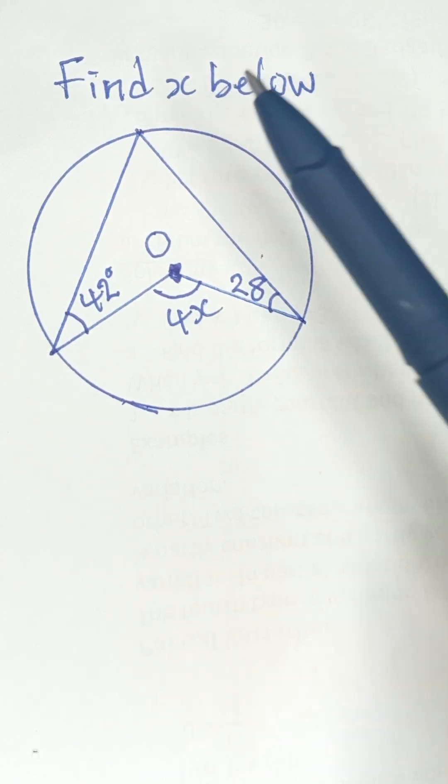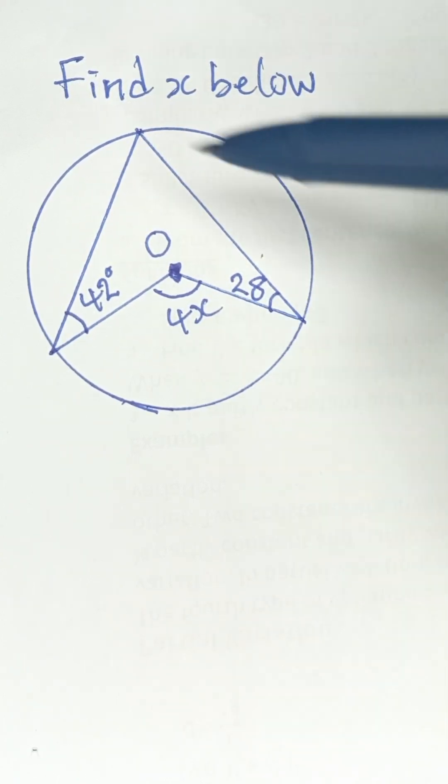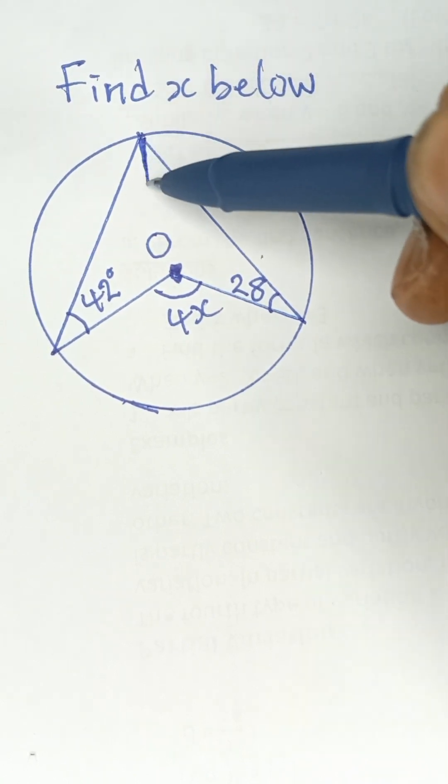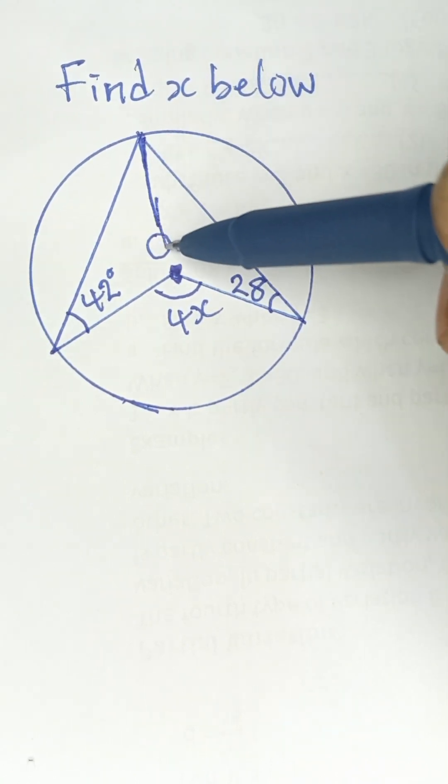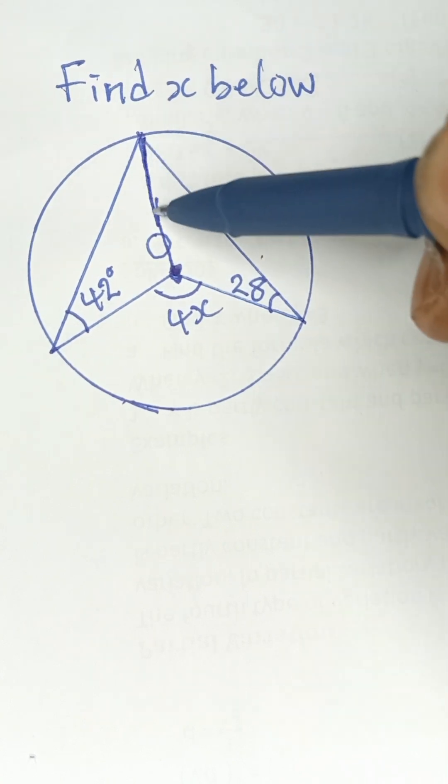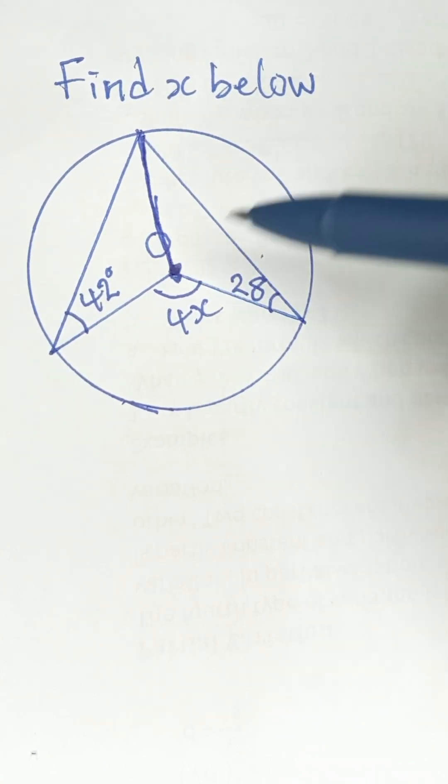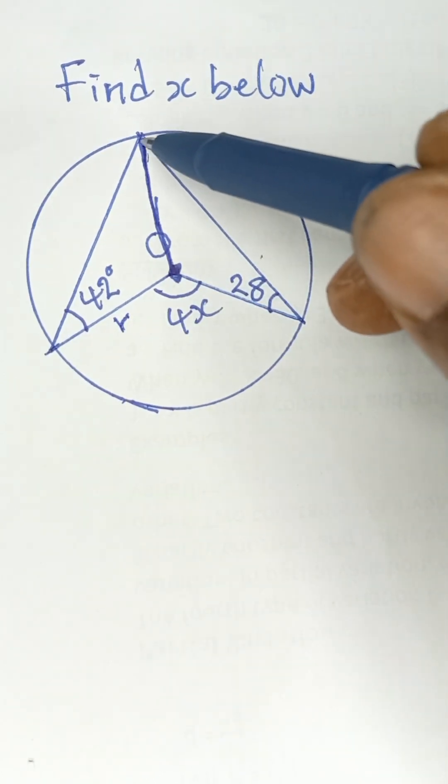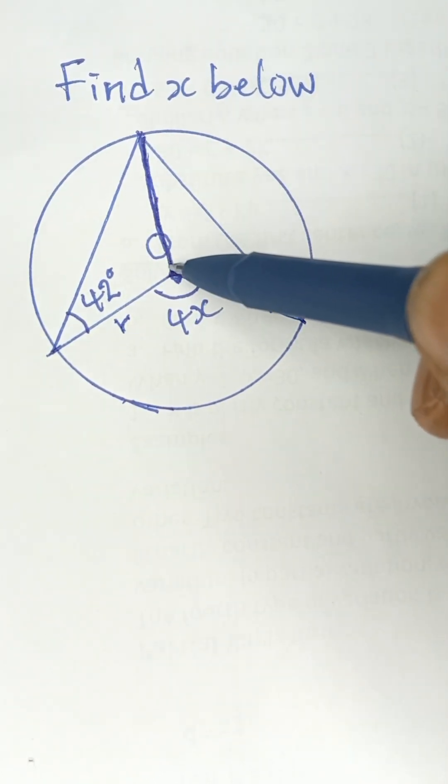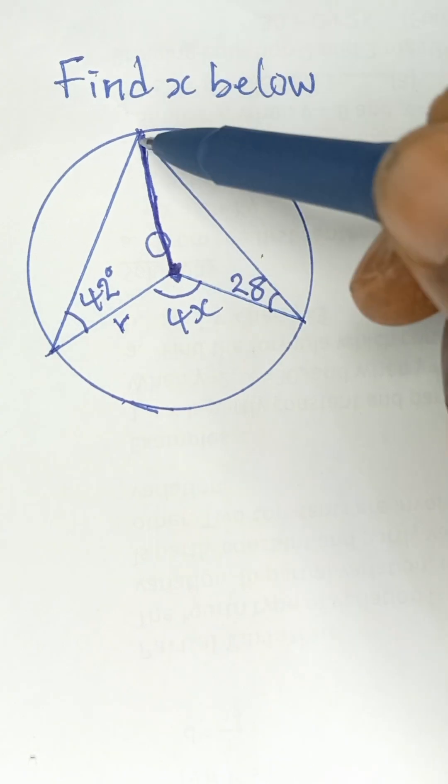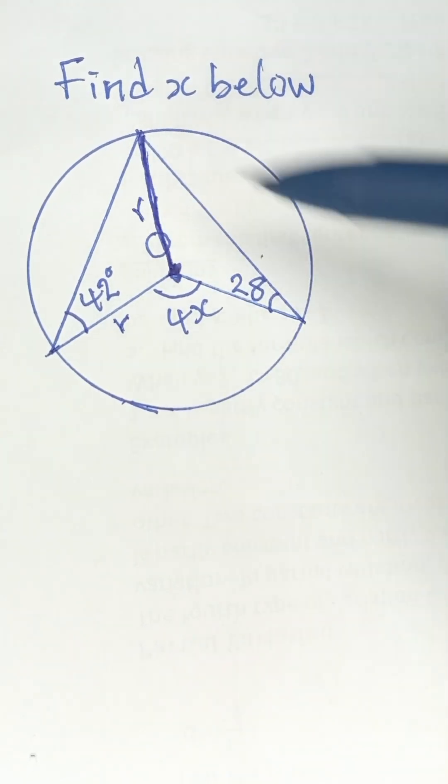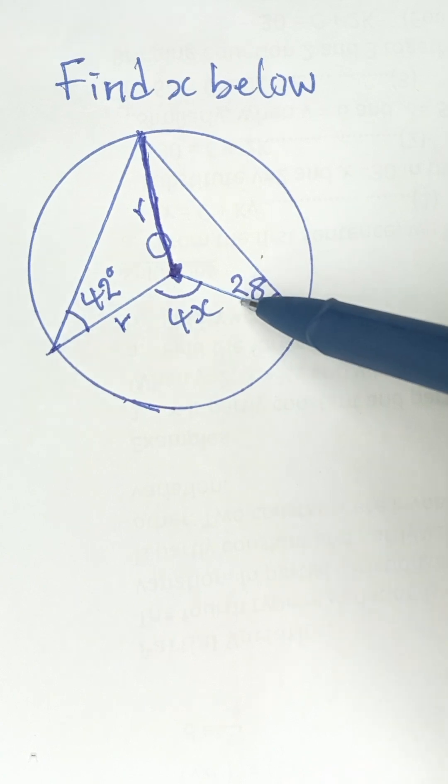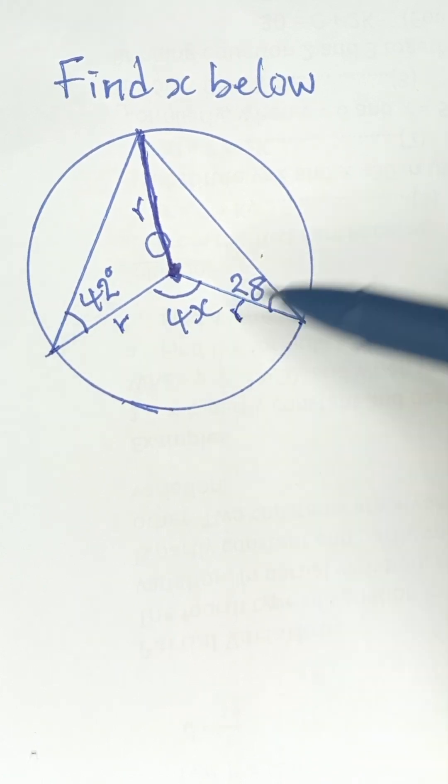Find x below. To do this, let's make a trace down from this point to the center of the circle. This line here is radius. This line from center to circumference is also radius, just like this line from center to circumference is also radius.